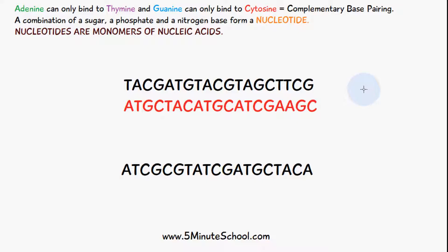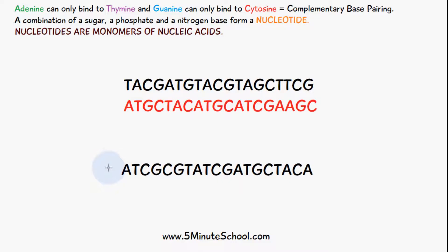I've left this example here — if you can work it out, write a comment in the comment section below with what you think the other strand of DNA will be. Remember, DNA consists of two strands bound in the middle by nitrogen base pairs, and the bonding only occurs through complementary base pairing. This example shows you one side, and the other side will be its complementary base pairs.